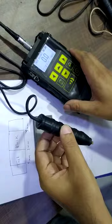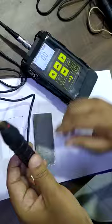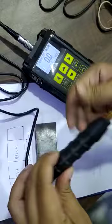This is the crack depth gauge machine. This machine is used to measure the depth of surface cracks. I have connected the probe with the machine. Now I will select the material.